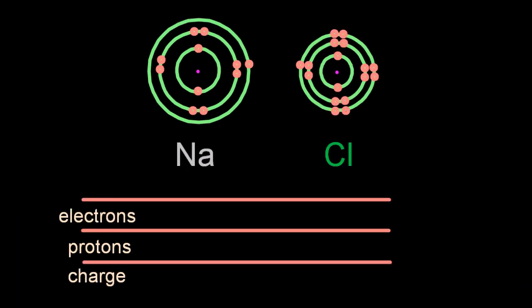To work out the electrons and protons, you're looking at the atomic number. So the atomic number for sodium is 11, and overall the charge on the sodium atom, and indeed every atom, is zero. Chlorine has an atomic number of 17, which gives me 17 electrons, 17 protons.